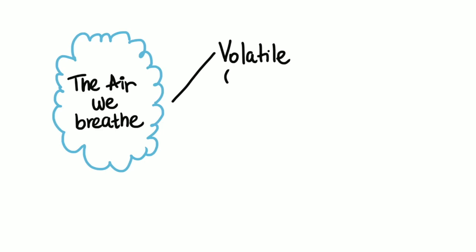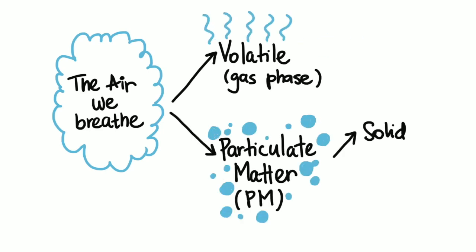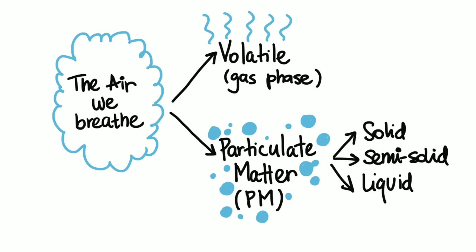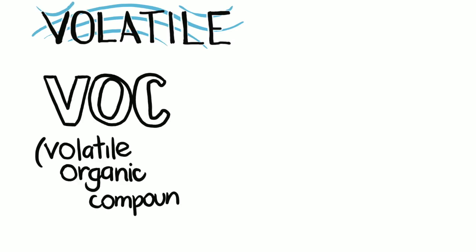The air we breathe can be sorted into volatile or gas-phase components and particulate matter, which can be solid, semi-solid, or liquid. Among the volatile components of the air, we have some important categories of air pollutants to consider.